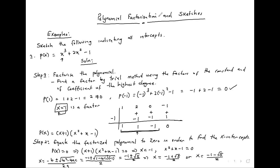You only use the difference of two squares if it exists, but this case is different — it's not a difference of two squares. So for this case we don't have that option.